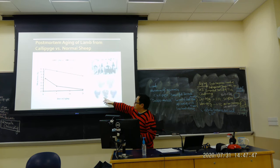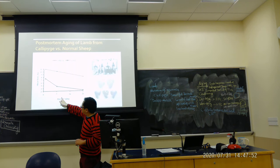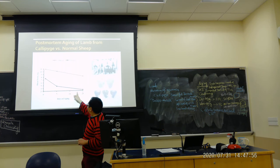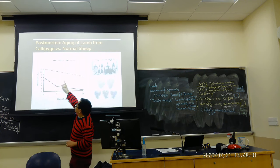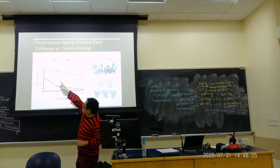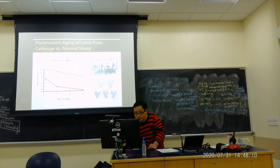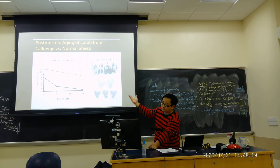Look at the shear force value. Even with dry aging or wet aging, the normal one goes from a shear force of eight down to three or four — that's what we like, very tender. But look at Callipyge: it starts at eleven and ends at eight to nine. You'd be using a blade to cut it — you can barely do it.